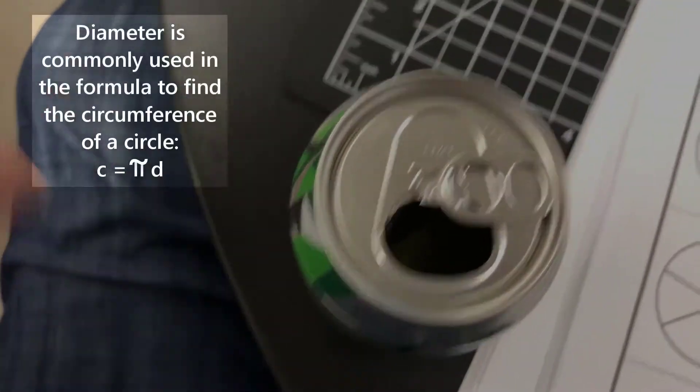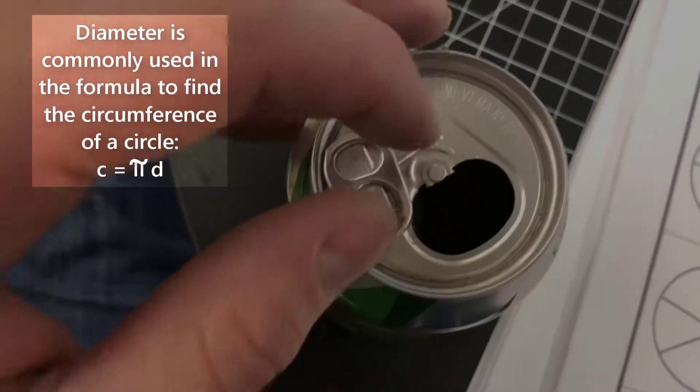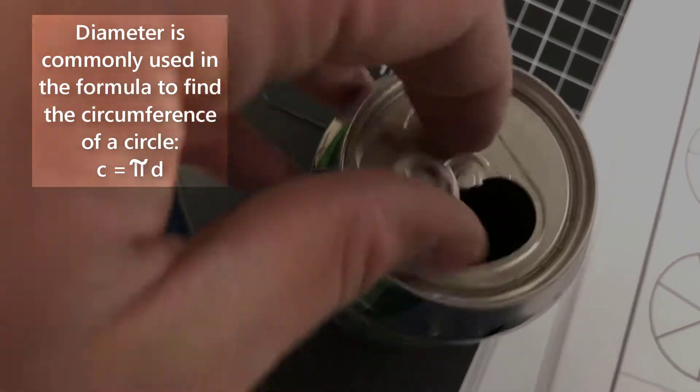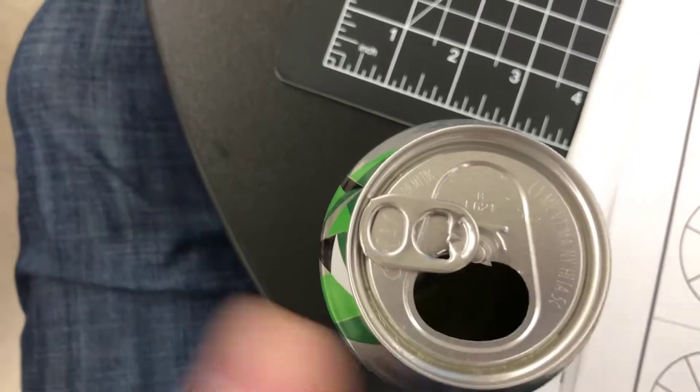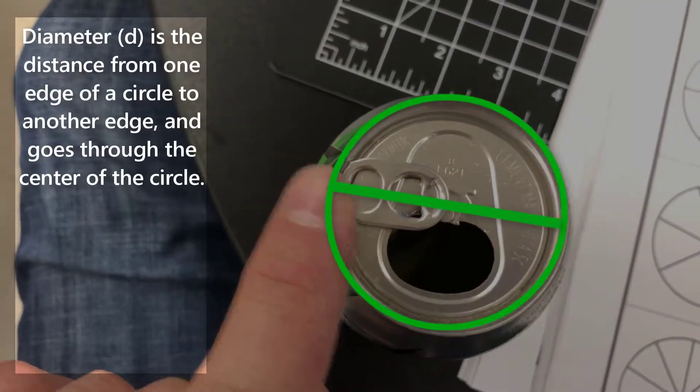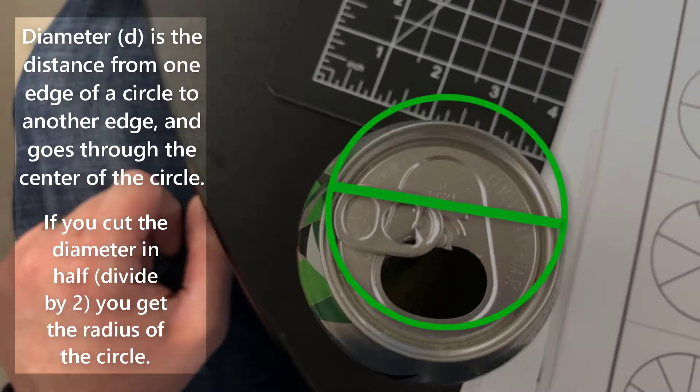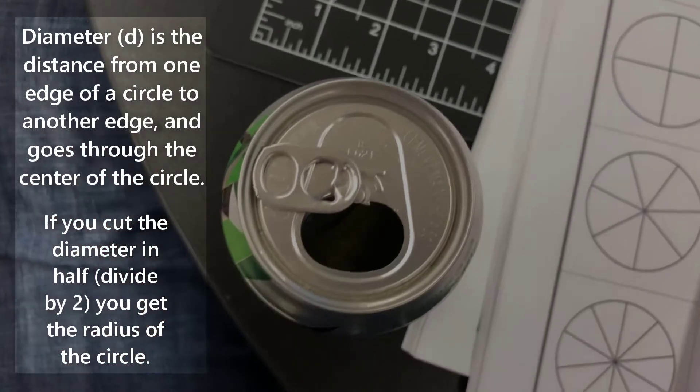One radius plus another radius is going to give us our diameter. Two of these equals one diameter. There's a hack.